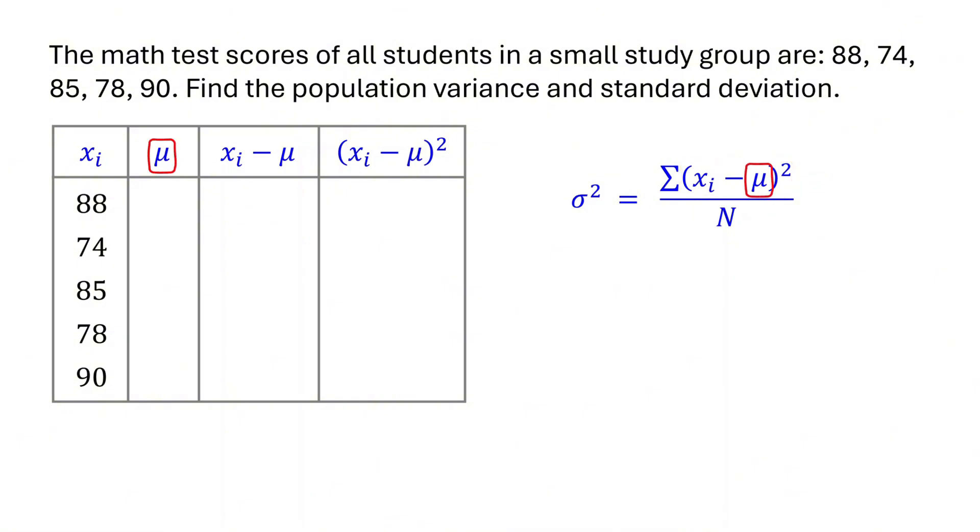The first thing to find is the population mean. The population mean is the sum of all data points divided by the population size. So first, add up all the data points in the population. Then, divide by the number of data points. Here we have 1, 2, 3, 4, 5 data points. So the population size is 5. Therefore, we divide by 5. The sum of these numbers is 415. Feel free to use a calculator if needed. 415 divided by 5 is 83. So the population mean is 83. Now write down 83 in the second column of the table.